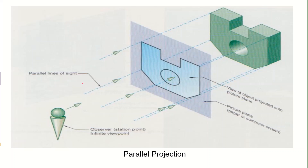The other type of projection method is parallel projection. Unlike perspective projection, all lines of sight are parallel from the user to the solid model. It doesn't matter where you place the screen — since the rays are always parallel, the projected image on the screen will always be the same size regardless of whether the screen is closer to the solid model or to the observer. That is the principle of parallel projection.